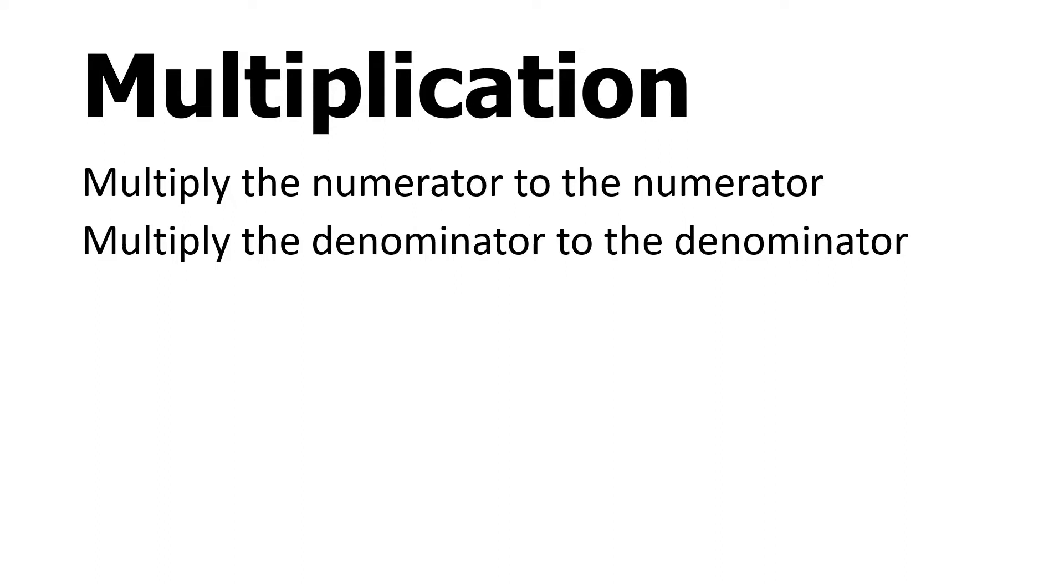Just remember this: multiply the numerators to numerators, numerator to numerator, and denominator to denominator. For example, we have one half times three fifths. The rule is multiply numerator to numerator: one times three equals three. Then denominator to denominator: two times five equals ten. And that's the answer.